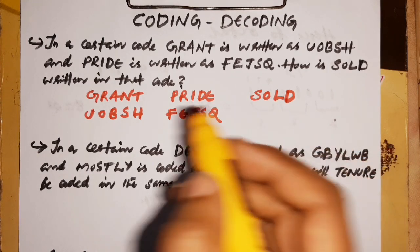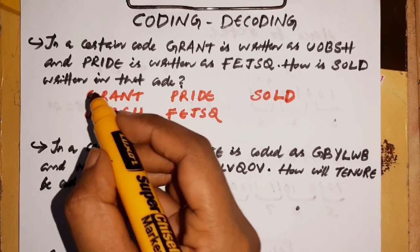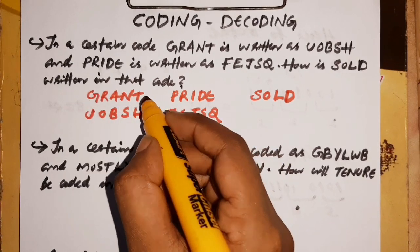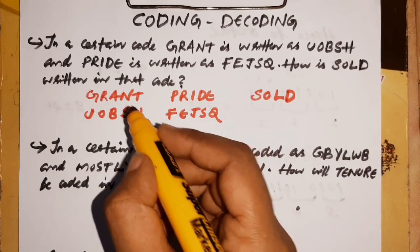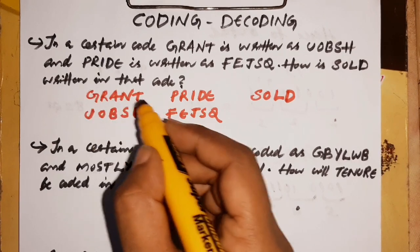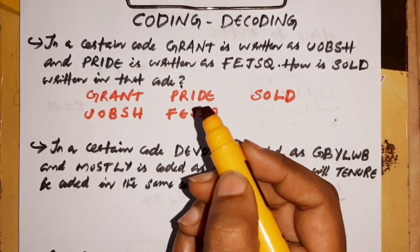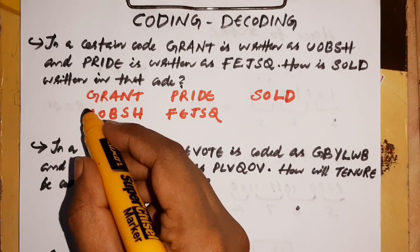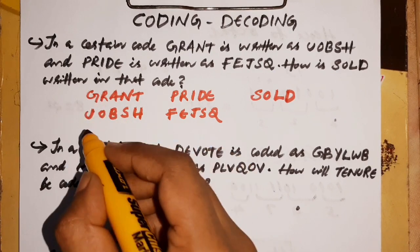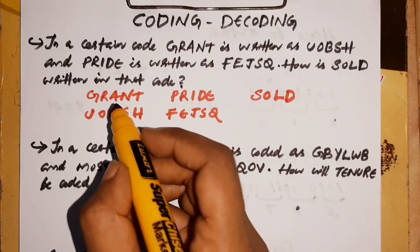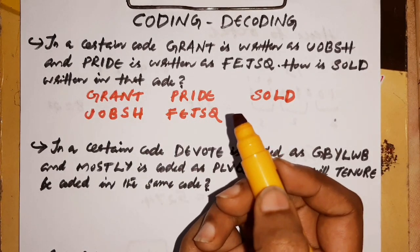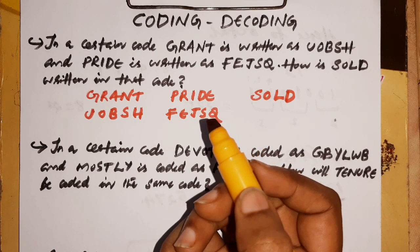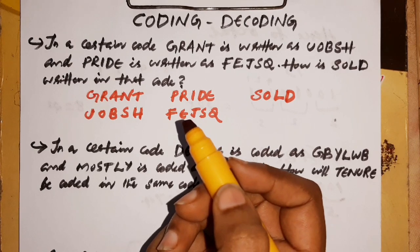For GRANT, we compare G and U as a direct mapping. The difference between G and U is noted. Similarly, T and H is the difference. The question is about how much difference exists between the letters. The difference with G, U, H, T, and N is not straightforward to solve directly.